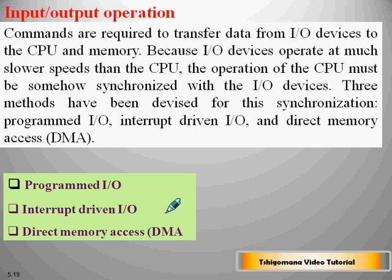Commands are required to transfer data from I/O devices to the CPU and memory. Because I/O devices operate at much slower speeds than the CPU, the CPU's operation must be synchronized with the I/O devices. Three methods have been devised for this synchronization: programmed I/O, interrupt-driven I/O, and direct memory access (DMA).